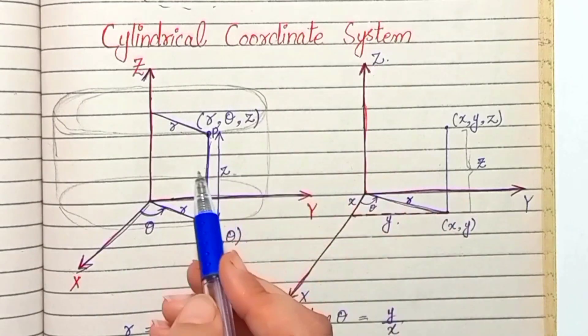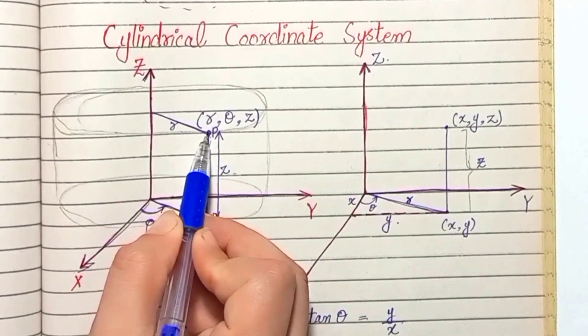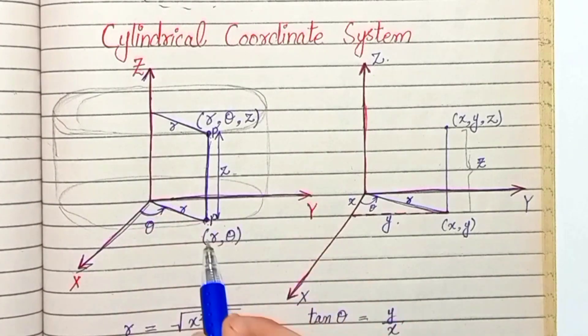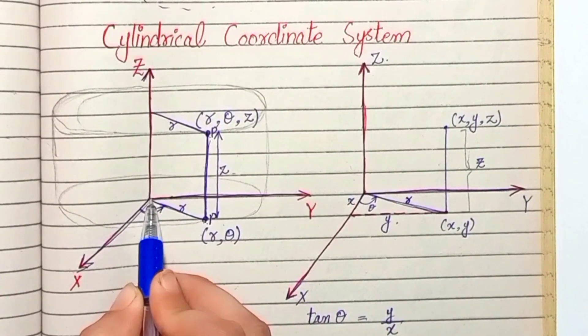Cylindrical Coordinate System. This is a coordinate system with a point P which has distance r from the z-axis, and this is the shadow of point P. Its distance is r from the origin O.